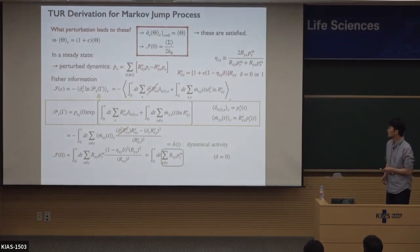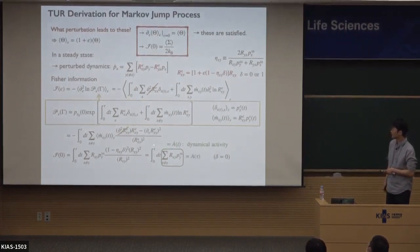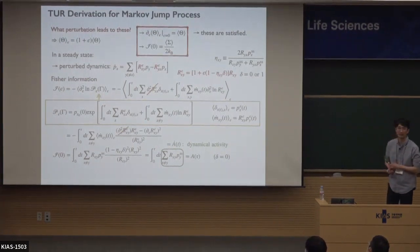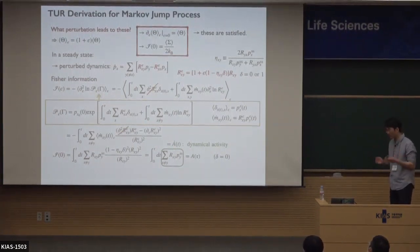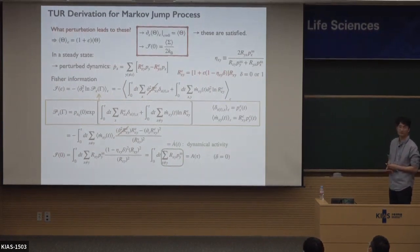The integration of this dynamical activity from time zero to t gives the total activity — that is, the total number of jumps during time zero to tau.